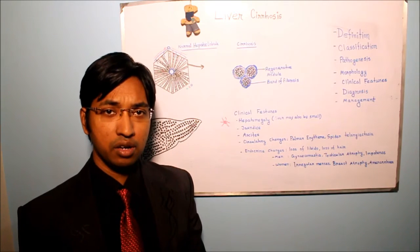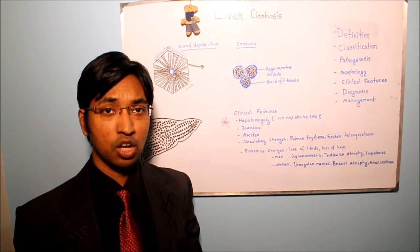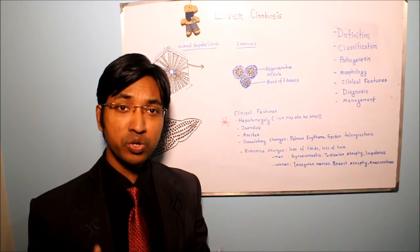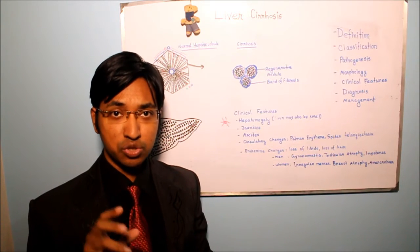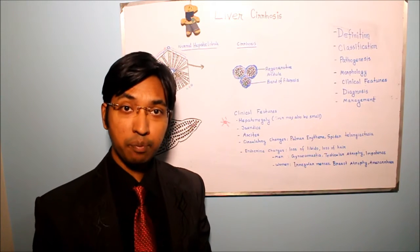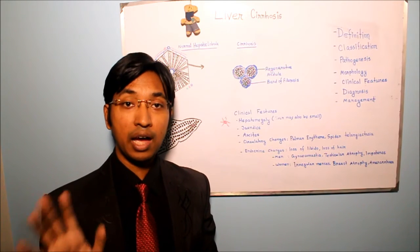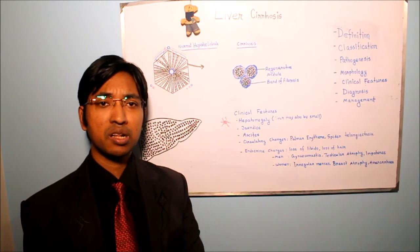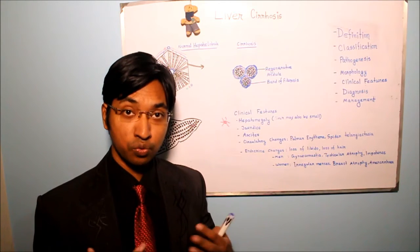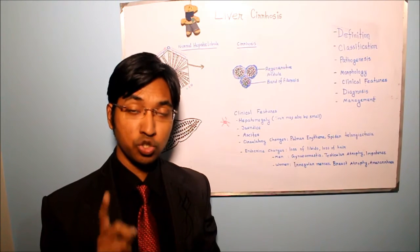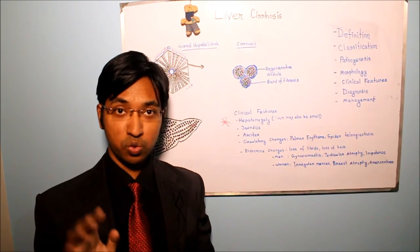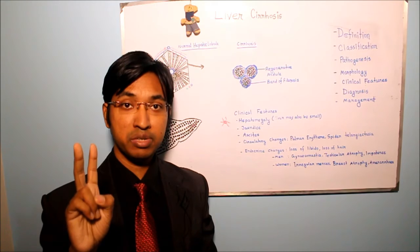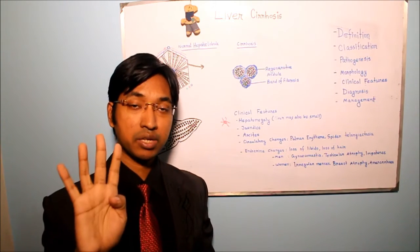Always remember, liver cirrhosis is the most common intrahepatic cause of portal hypertension. Portal hypertension will occur due to increased resistance to portal blood flow in the hepatic sinusoids, and can also happen due to increased portal blood flow as a result of hyperdynamic circulation. There are four major clinical consequences of portal hypertension: ascites, development of portal systemic venous shunt, congestive splenomegaly, and hepatic encephalopathy.